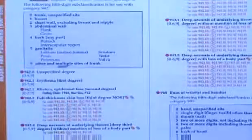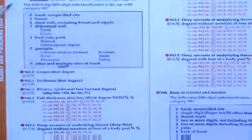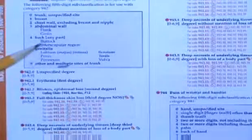So whenever you're coding multiple burns in the same category, you're only going to have one code per category. And if there's more than one, you're going to use the multiple fifth digit code. In this case it's 9.